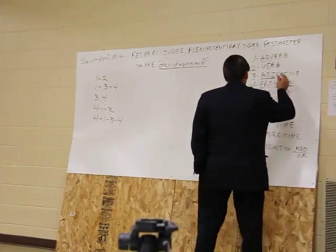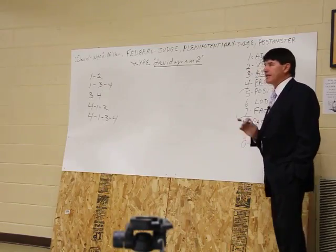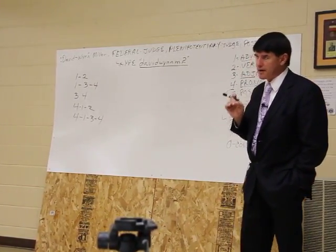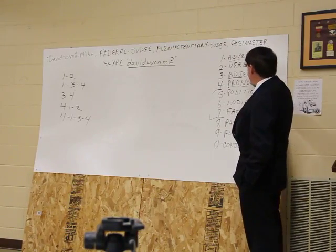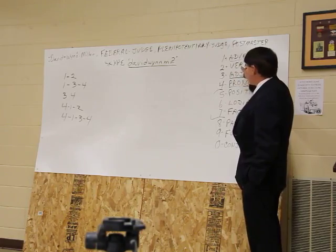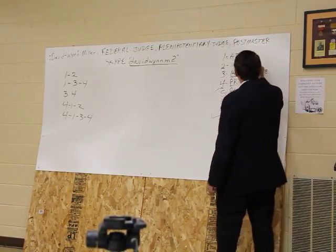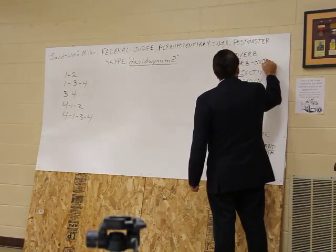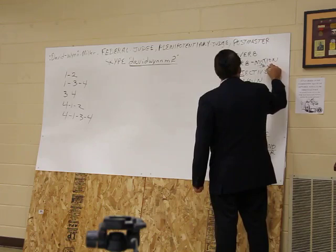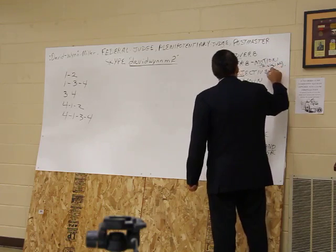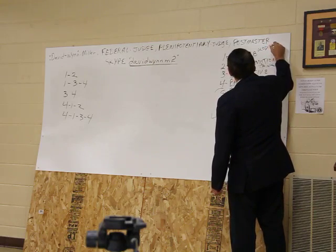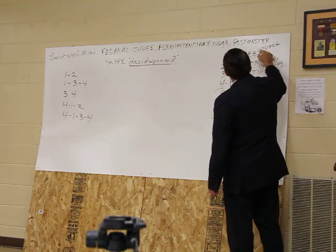What is an adverb? An adverb is a modifier. It modifies the condition of the speed of thinking. It's primarily designed to modify the verb in speech. The verb is the word thinking, or the word motion. And motion comes from thinking. So the adverb is a modifier of speed.